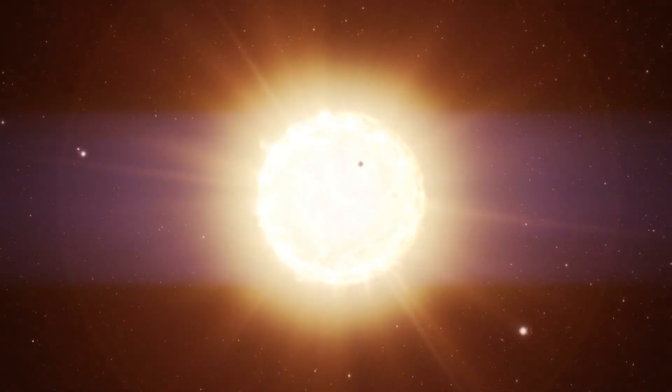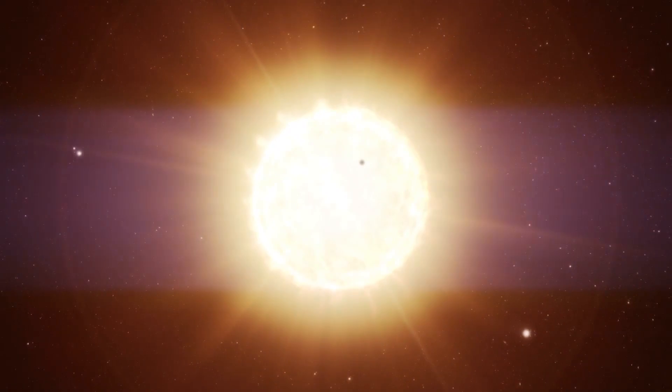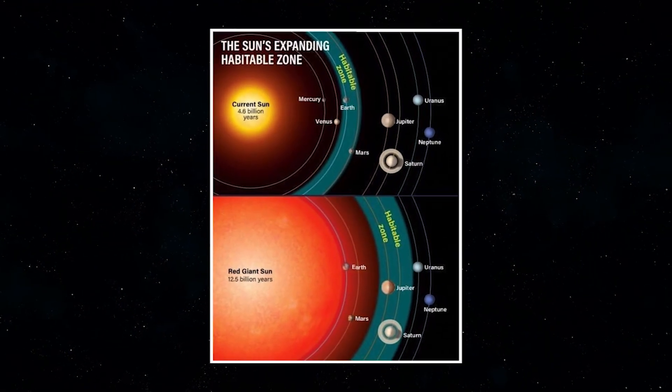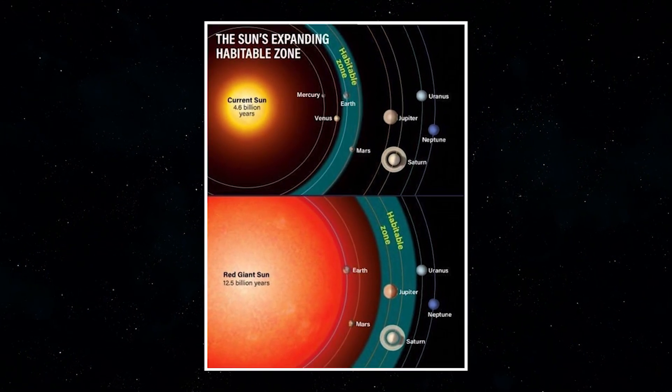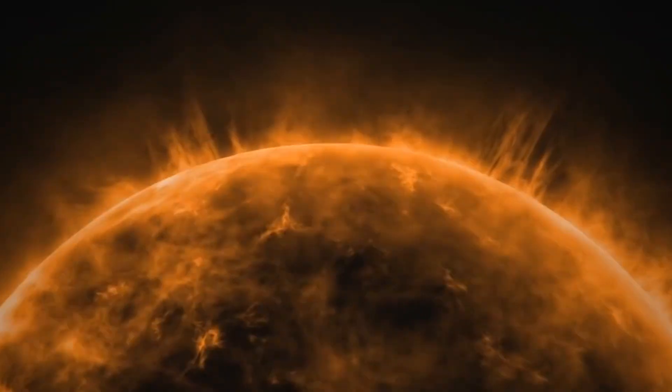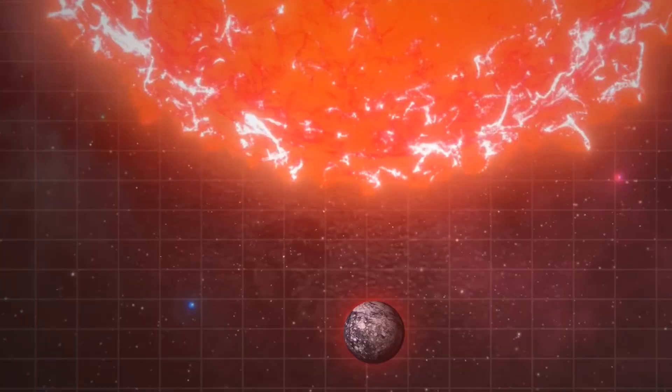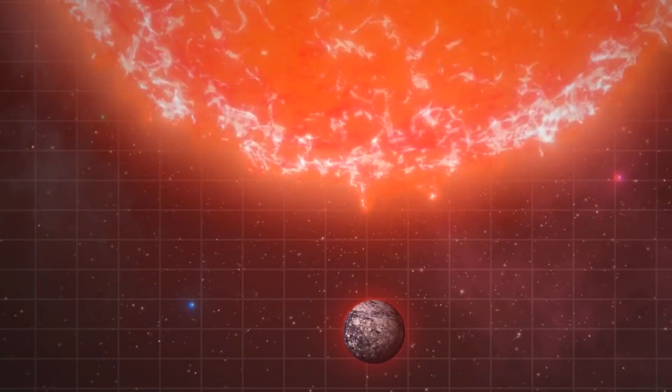Earth will be a scorched, roasted wasteland. Take a look at this. The top picture shows how the solar system is now. The bottom picture shows what our solar system will look like when our sun grows to be a red giant. Our blue marble will be swept up and driven into the Inferno.